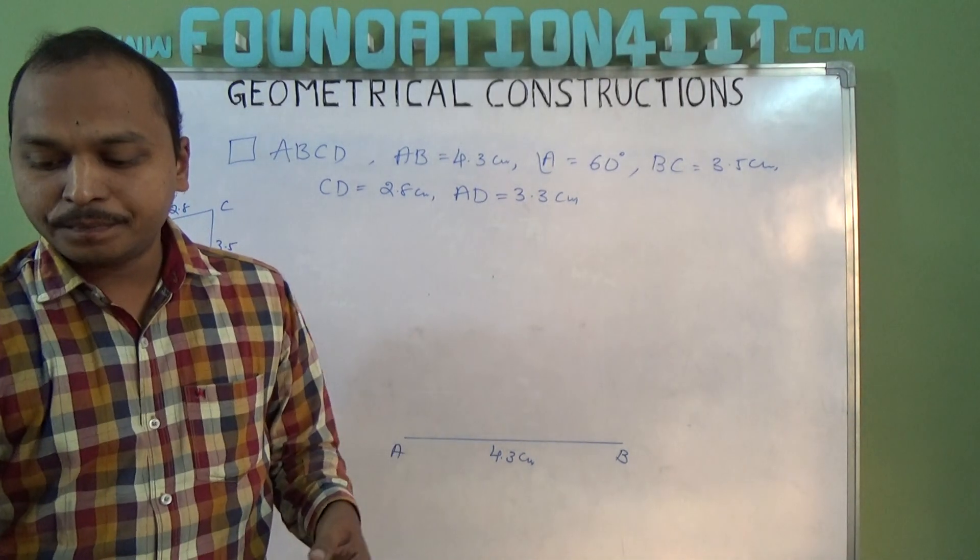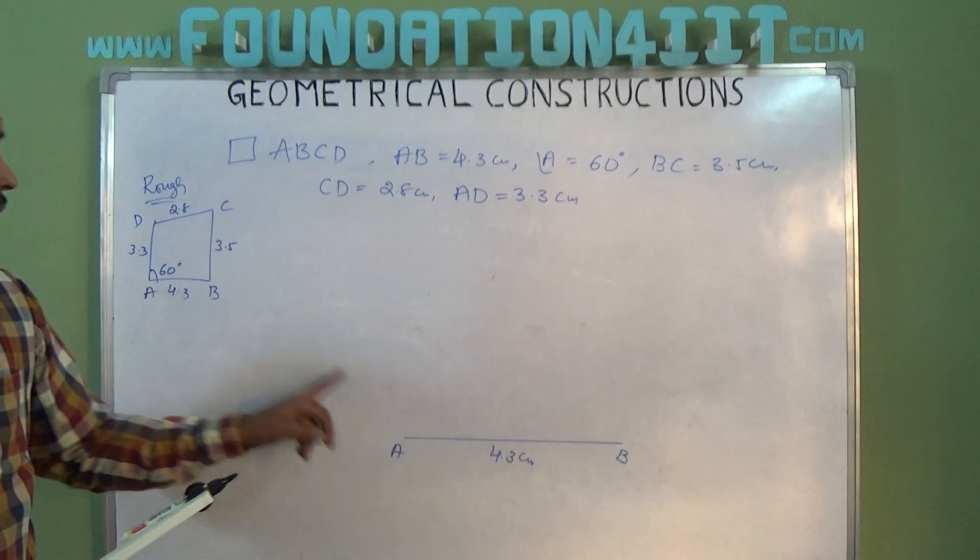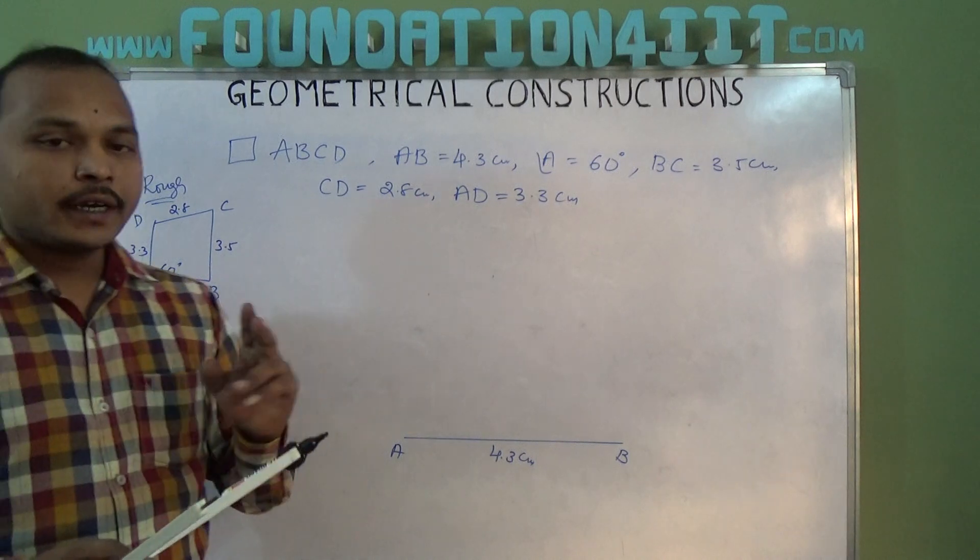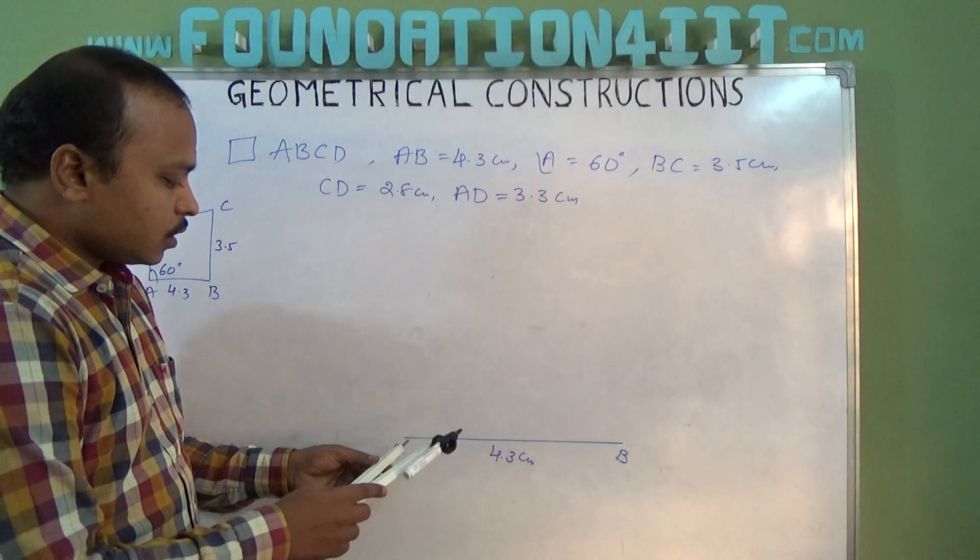Now angle A is 60 degrees. By observing the rough diagram, we can take one by one step. Using compass, we need to construct angle A at 60 degrees because four sides and one angle is given. That angle will be constructed first.